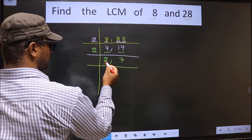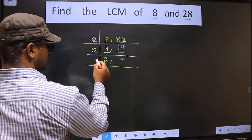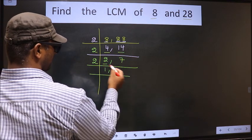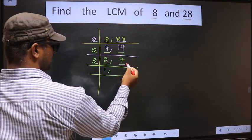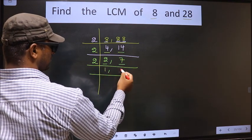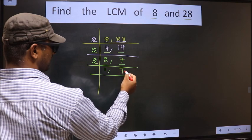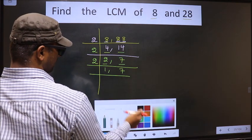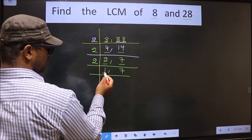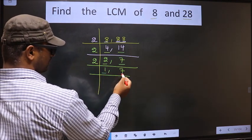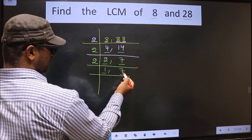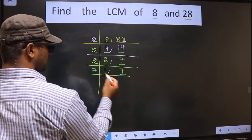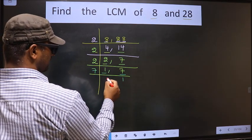Now we have 2 here. 2 is a prime number, so 2 ones are 2. The other number 7 is not divisible by 2, so we got 1 here. Focus on the other number, that is 7. 7 is a prime number, so 7 ones are 7.